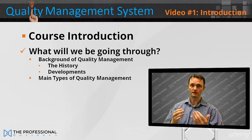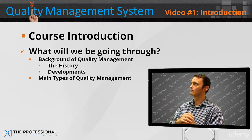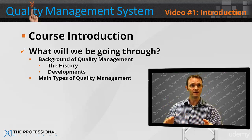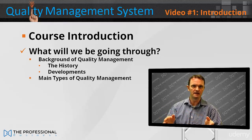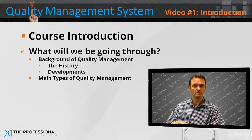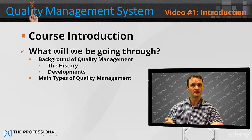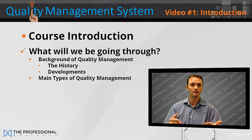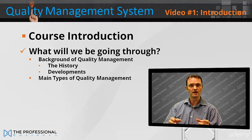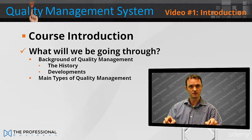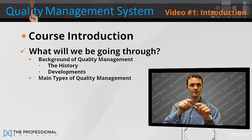What will we be going through? The background of quality management — the history and development. Quality management isn't a fad that's just been around the last 10 years, but it could be traced back at least 100 years to Deming in the United States, as well as the 1940s in Japan with the Kaizen principle — Kaizen being the Japanese for continual improvement. We'll also have a look at the different styles spawned from these, to show that the principles all remain the same.